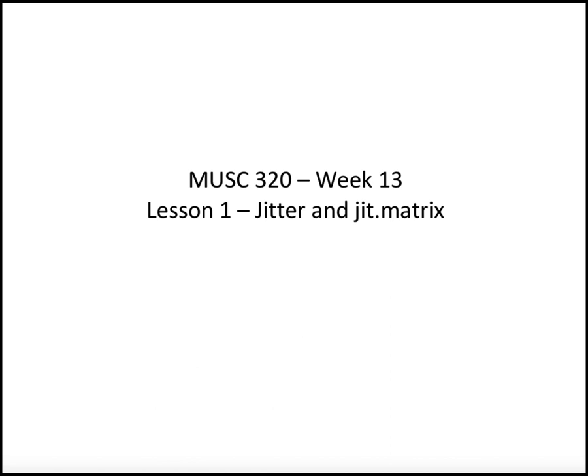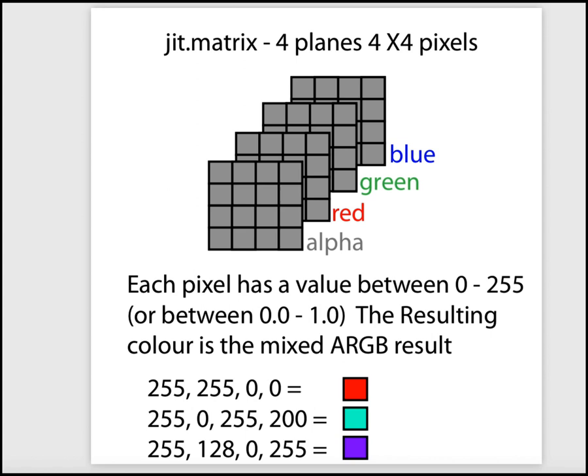Let's start by looking at the JIT.Matrix structure. We've looked at signal objects which pass signals — a continuous stream of floating point numbers — and we also had floats, ints, lists, bangs, and other data types. The JIT.Matrix is a different data type, one that's capable of passing video information from one object to another.